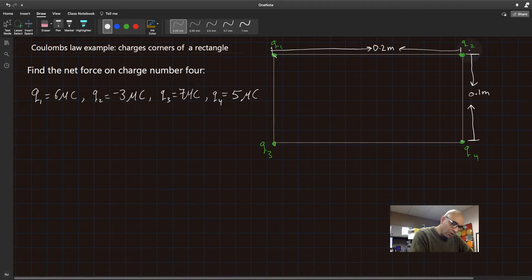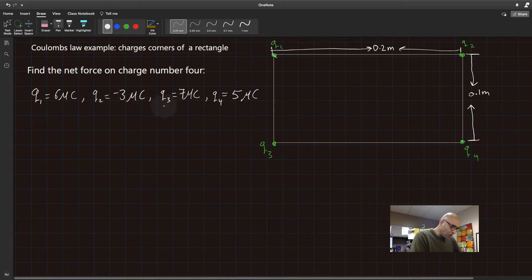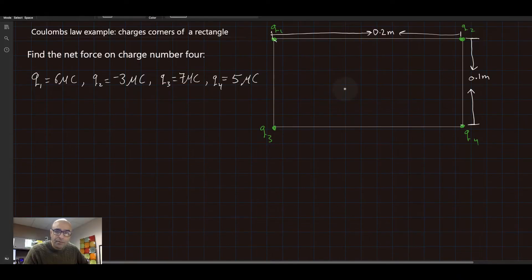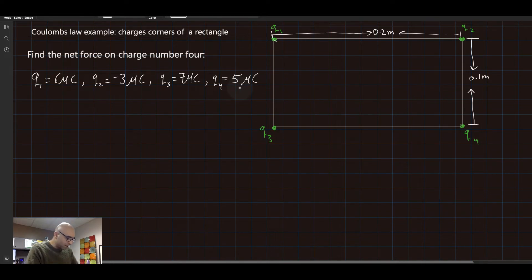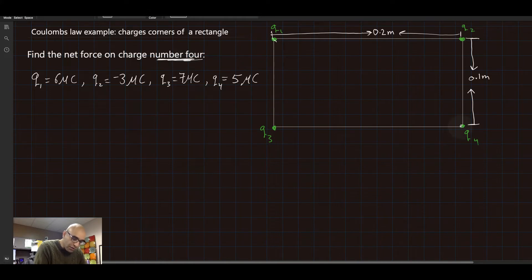There's charge number one, charge number two, charge number three, and charge number four. Each charge has a magnitude or value that is given. Q1 is six microcoulombs, Q2 is minus three microcoulombs, Q3 is seven microcoulombs, and Q4 is five microcoulombs. Micro is ten to the minus six. The question is: find the net force on charge number four — that is our charge of interest.